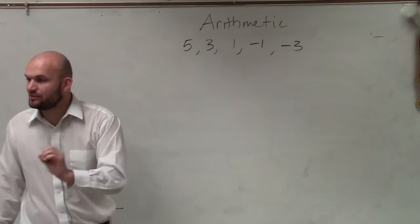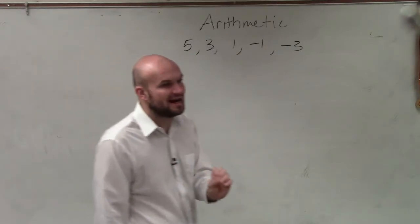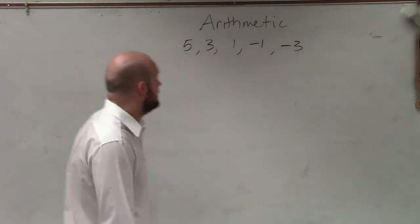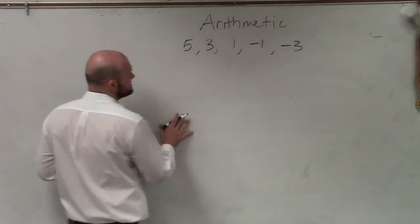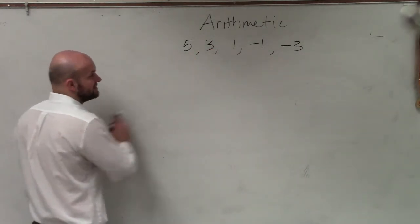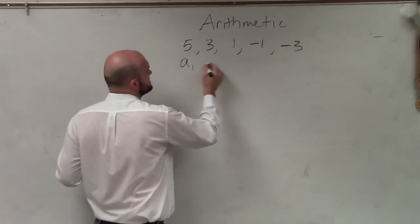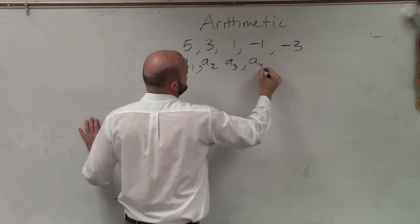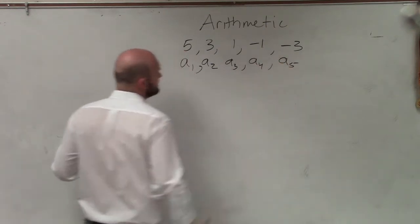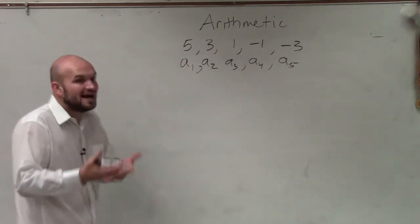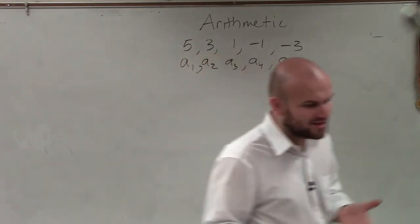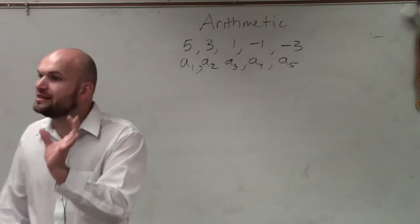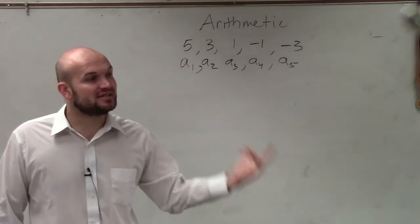The arithmetic sequence is a sequence that is defined by what we call a common difference. So if we look at this sequence, we could call them a₁, a₂, a₃, a₄, a₅. What's nice about an arithmetic sequence is that the difference between each and every value in that sequence is exactly the same.